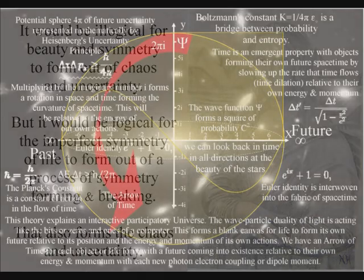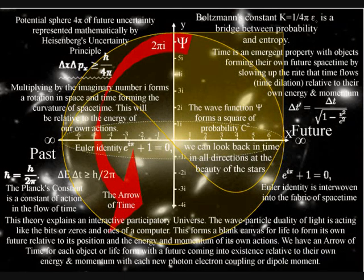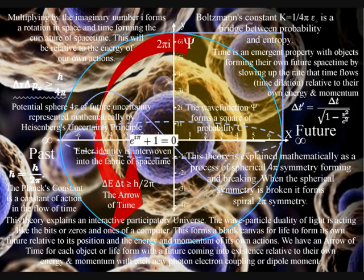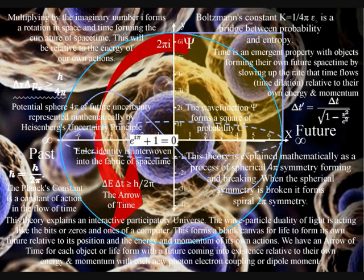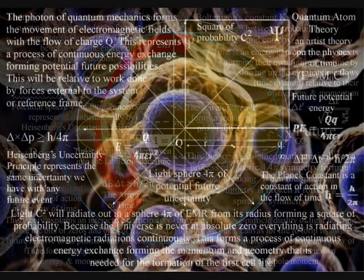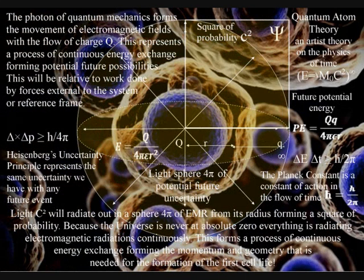This theory can also explain where the potential comes from for the organization and structure that we have within the universe. Because this is a process of symmetry forming and breaking, there is always the potential for ever greater symmetry formation. This forms the potential for ever greater diversity and complexity of cell life, with life forming its own evolutionary path as an integral part of this process.